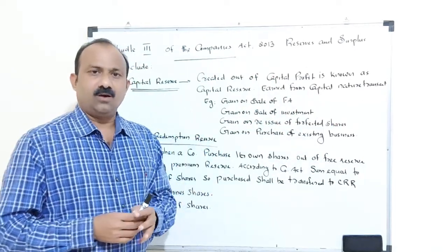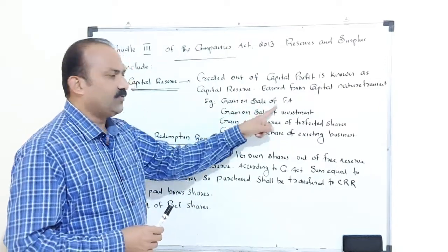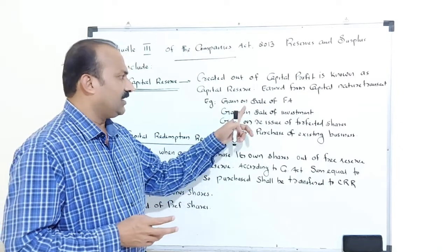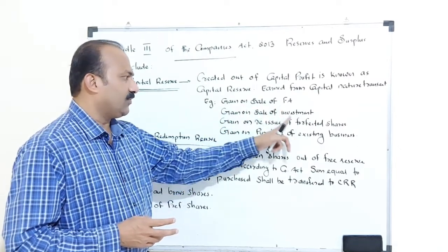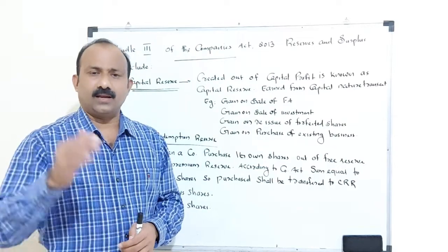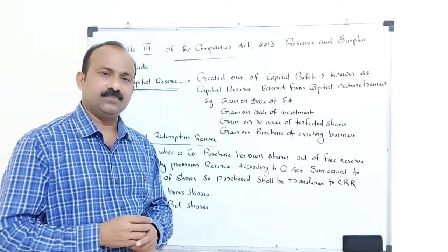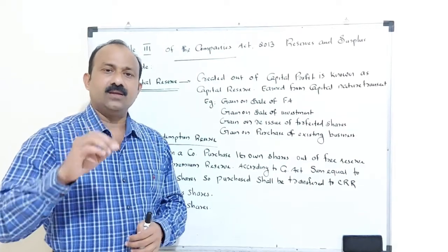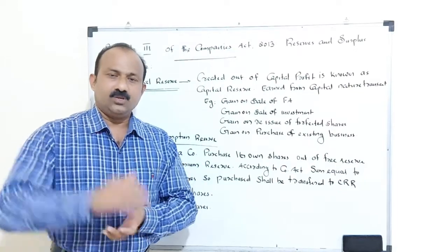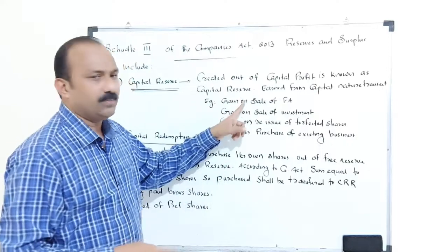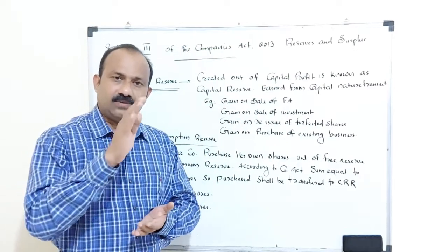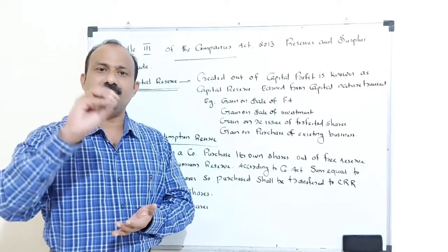The main examples of capital reserve are: gain on sale of fixed assets — this is a capital nature transaction, since you cannot frequently sell your fixed assets; gain on sale of investments; gain on reissue of forfeited or cancelled shares — sometimes shareholders are unable to pay the share money due to the company, and the company can cancel that shareholder's name and reissue to someone else; and gain on purchase of an existing business. These are the main items under capital reserve, which is the reserve created out of capital nature transactions.